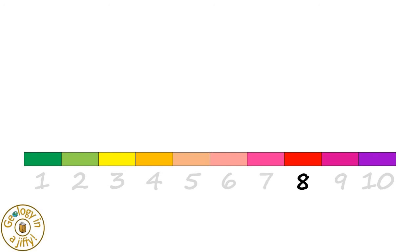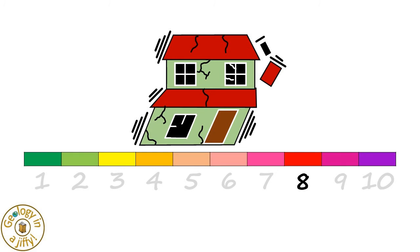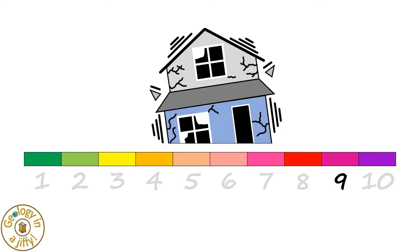Magnitude 8 earthquakes can be felt over 100km from the epicentre, and many, many buildings are flattened by shaking. Magnitude 9 earthquakes cause bridges to be destroyed, and every poorly built building to be flattened.